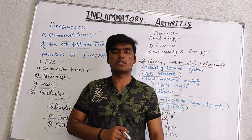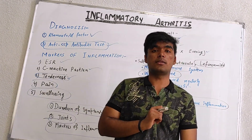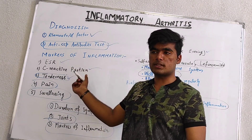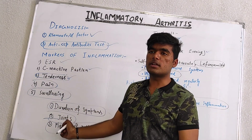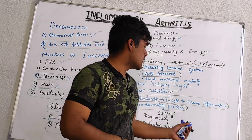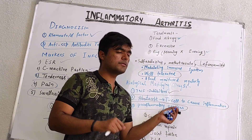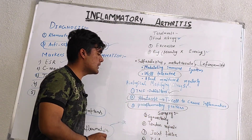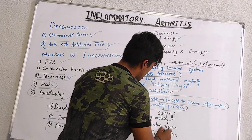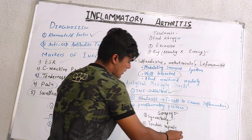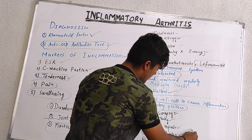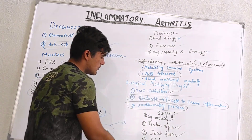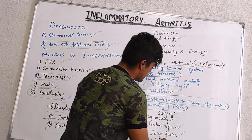After these drugs, if the patient does not respond to treatment, the last stage is surgery. In surgery, we either remove the joint, repair the tendon, fuse the joint, or totally replace the joint. Physical therapy is also given to the patient. After these interventions, we are able to treat this arthritis.